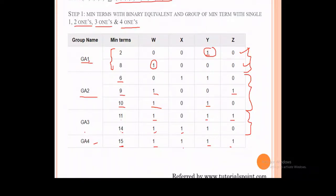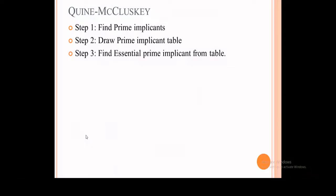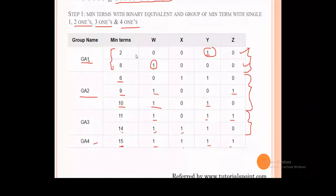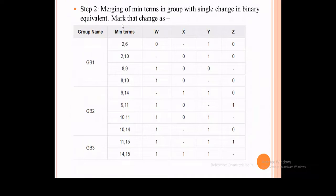So we have made these groups — GA1, GA2, GA3, and GA4 — and these groups are called prime implicants. That is what our first step accomplishes. Now step two: merging of minterms in adjacent groups with a single change in binary equivalent. Mark that changed bit as a dash.